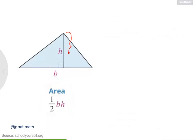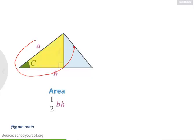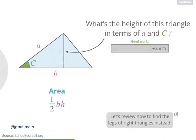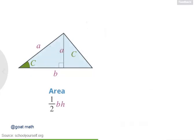Next, suppose we don't actually know the height of this triangle. Instead, we know that the length of this side over here is a, and suppose we also know that the measure of the angle between these sides is uppercase C. Notice that we have a right triangle over here. Try using this right triangle, and perhaps a trig function, to find the height of our blue triangle. If you're not sure how to do that, click down here to review. Nicely done. The height of this triangle is a times the sine of c.